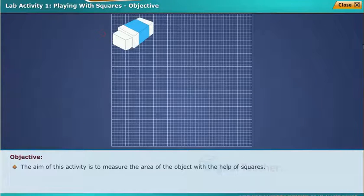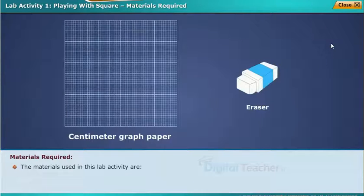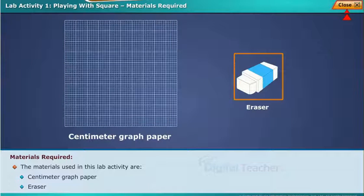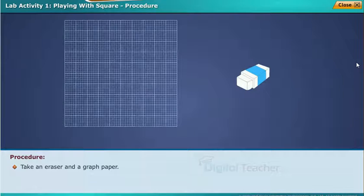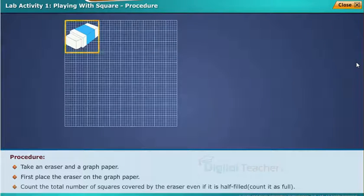The aim of this activity is to measure the area of the object with the help of squares. Materials required: Take an eraser and a graph paper. First, place the eraser on the graph paper. Count the total number of squares covered by the eraser even if it is half filled. Count it as full.